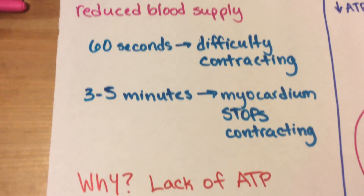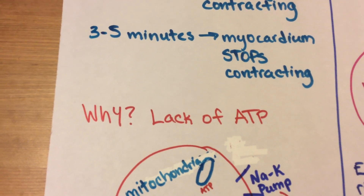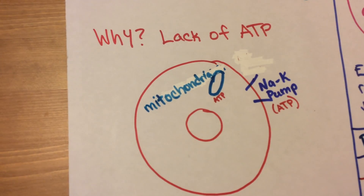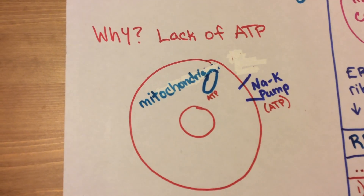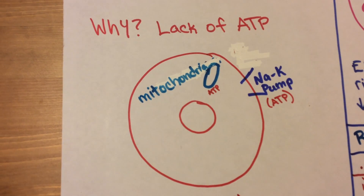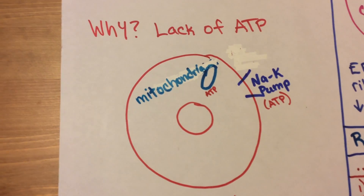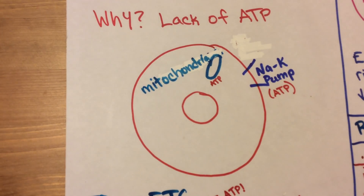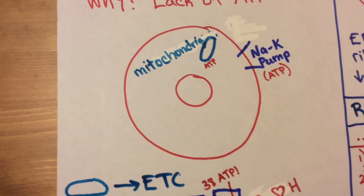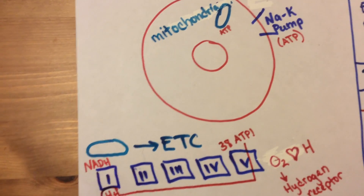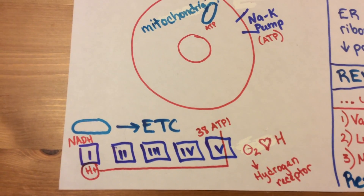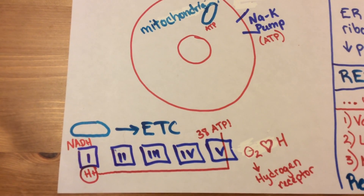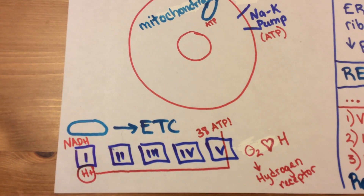Now why does that happen? It's a lack of ATP. Let's think about the role of ATP within the cell. We know that the mitochondria are responsible for making ATP, and the sodium-potassium pump is a really important part of the cell that uses more ATP than any other function. The mitochondria make ATP with the electron transport chain through what we call aerobic respiration.